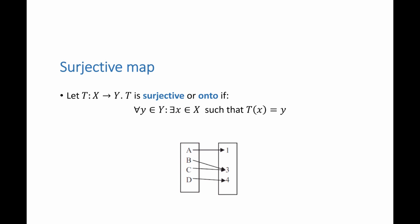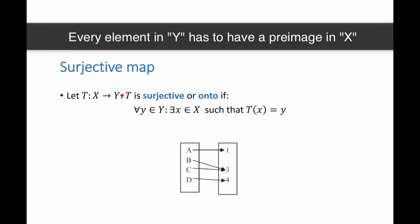The formal definition is as follows. If I have a map t from the set x to the set y, t is called surjective or onto, it's the same thing, if every element in y, there has to exist an element in x such that t of x is y, such that y is the image of x.